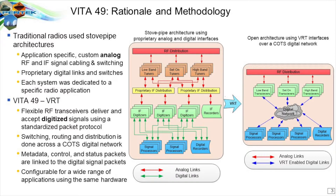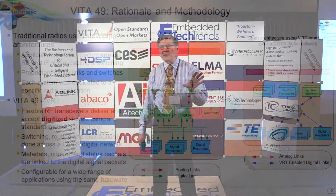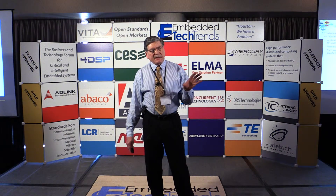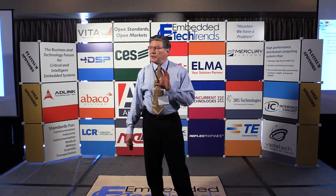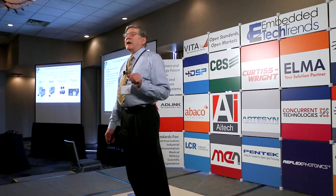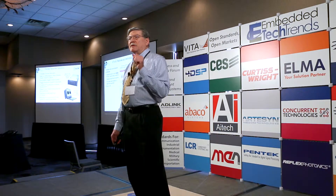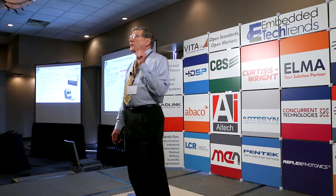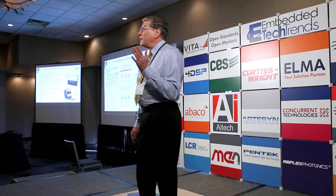So what's the rationale? Traditional systems that have been out for a long time for radio and radar used what's called stovepipe architecture. What that means is that all of the wiring from the RF to the IF to the A-to-D converters was done with custom cabling laid out according to a particular architecture based on the application — not very flexible. Vita 49, also known as VRT, which is the Vita Radio Transport Protocol, is the same thing as Vita 49.